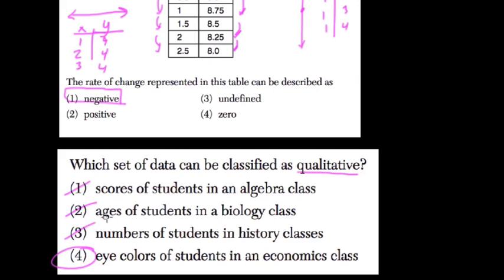But eye color, you tell me the color of the student. And it's true that color can be defined with numbers, and everything really can. But you're looking at the eye colors. You're going to use words like blue, green, blue-gray, and so forth. Those are qualitative measures, so choice four.